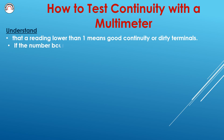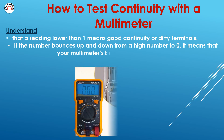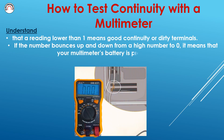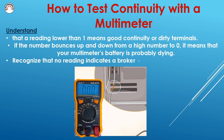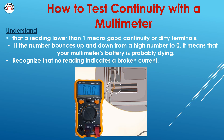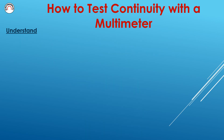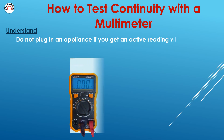If the number bounces up and down from a high number to zero, it means that your multimeter's battery is probably dying. Recognize that no reading indicates a broken circuit. Do not plug in an appliance if you get an active reading when testing a wire and the frame.